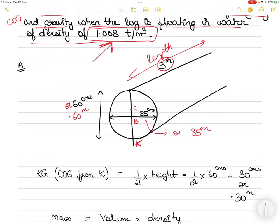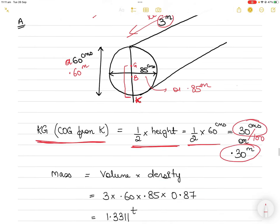K to G, so the center of gravity will be located at the center of the height of the log. The center of gravity or KG will be at half the height of the log. So height of the log is 60 centimeters, half it is 30 centimeters, or convert it to meters by dividing by 100, so 0.30 meters. That is where the center of gravity of a log is, always at half of the height.